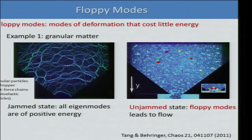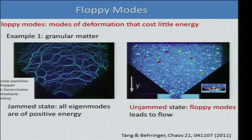In the first state, the particles are jammed, and you can see the force chains in the system because they use photoelastic particles. On the right, it's not jammed and the particles are flowing. The difference is that if you calculate the eigenmodes of particle motion, all eigenmodes here have positive eigenvalues — it costs positive elastic energy to move any particle. You're only seeing the ones that bear force.